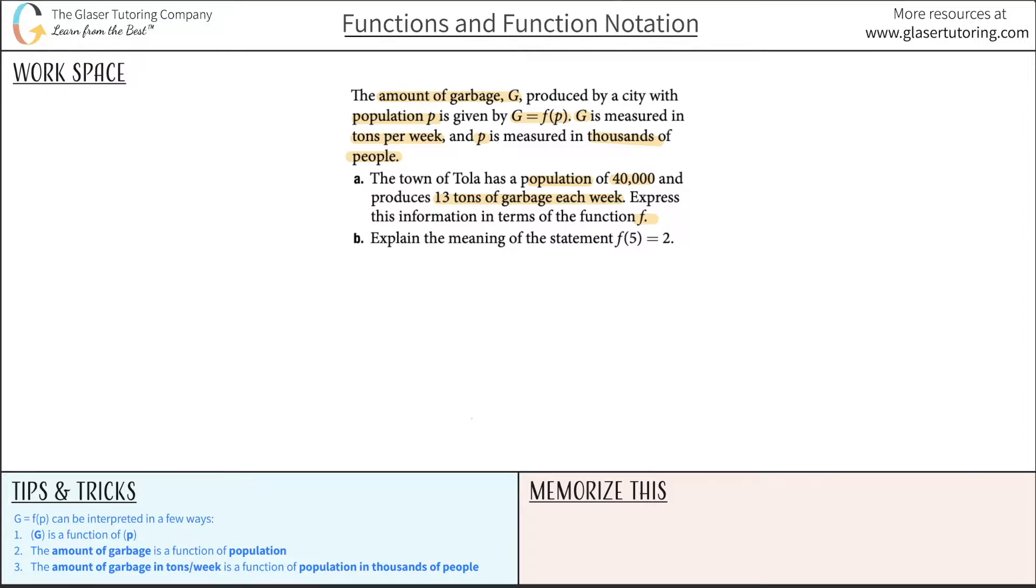So we first have to understand what these terms mean and how to reinterpret the given information. They told us a simple function: G is equal to a function of P. What we really need to do is understand how to interpret this functional notation in a few richer contexts. At the bare minimum, I can state this as G is a function of P.